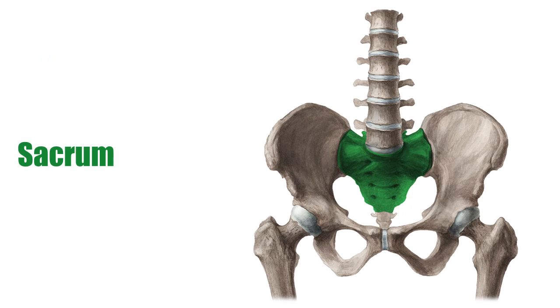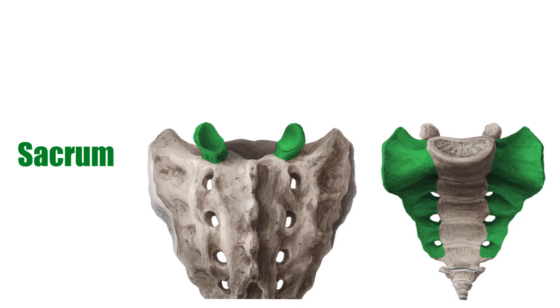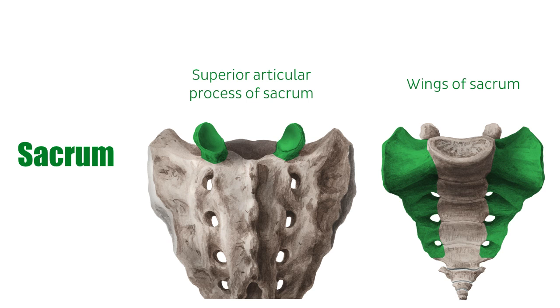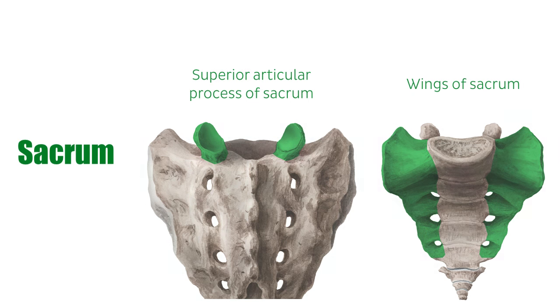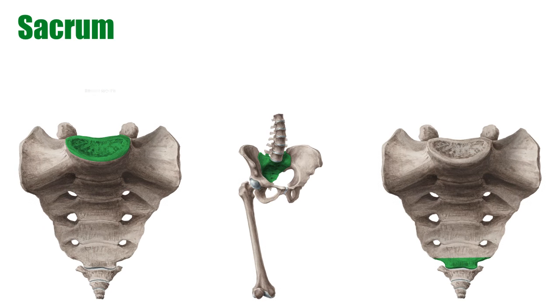The sacrum, which is a major feature of the pelvis, has the following parts: the superior articular process, the wing of the sacrum, the base of the sacrum, the pelvic surface of the sacrum, and the apex.